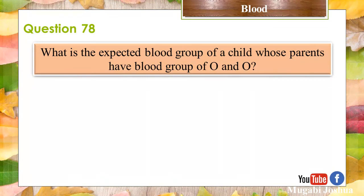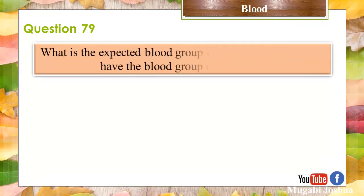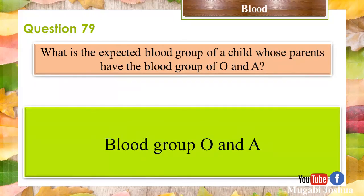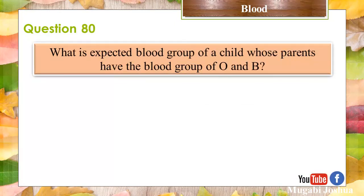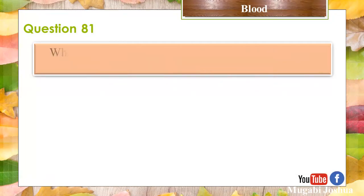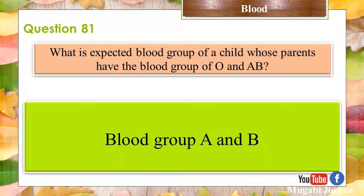Question 78: What is the expected blood group of a child whose parents both have blood group O? Blood group O. Question 79: What is the expected blood group of a child whose parents have blood group O and A? Blood group O and A. Question 81: What is the expected blood group of a child whose parents have blood group O and AB? Blood group A and B.